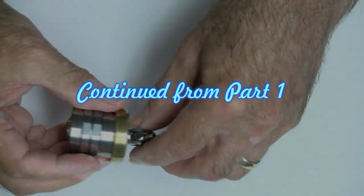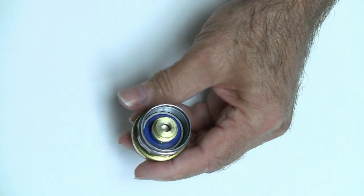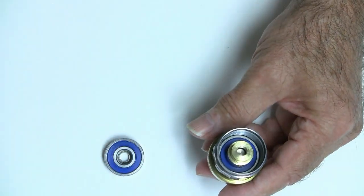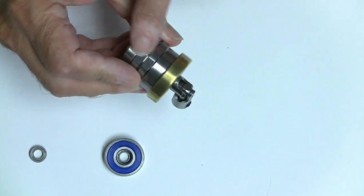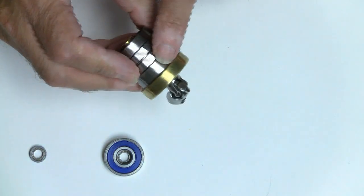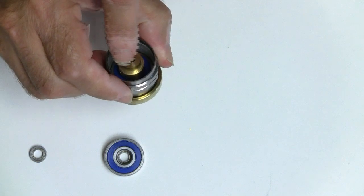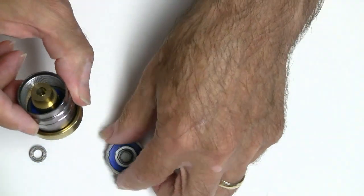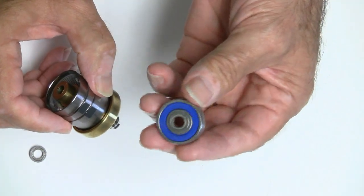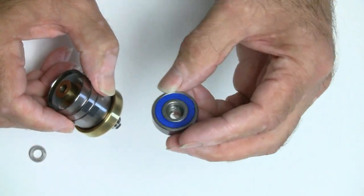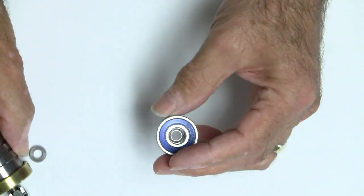After I got that done, I pressed it down through a bearing. Let me show you this bearing here. The outer diameter of the head of the flashlight had an inside diameter of 26 millimeters, so I knew I needed a bearing with an outside diameter of 26 millimeters.